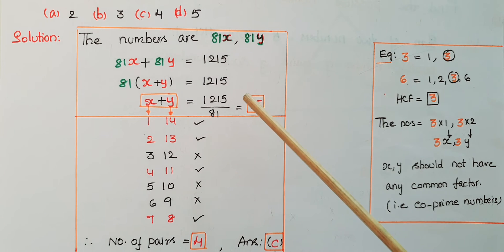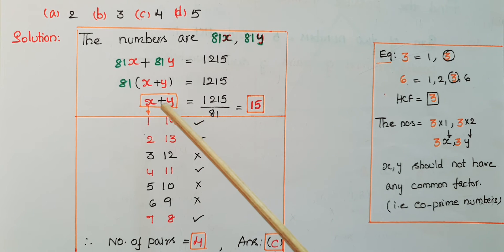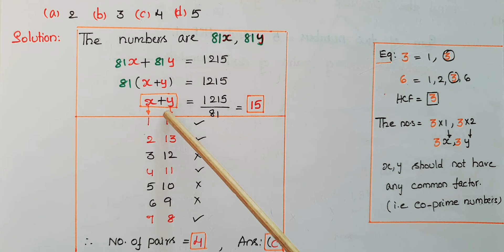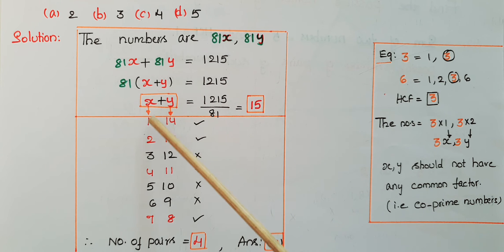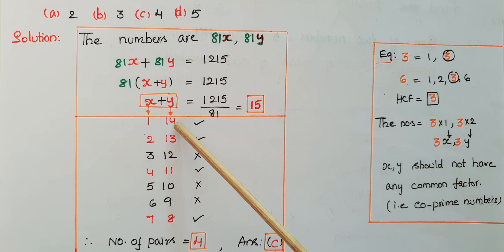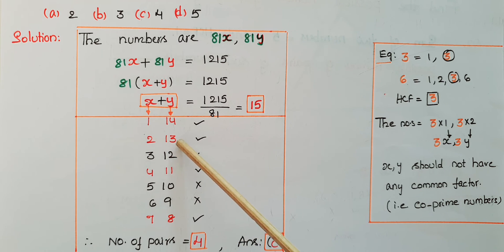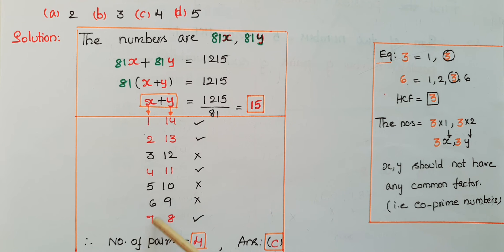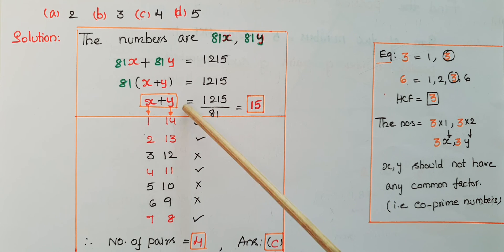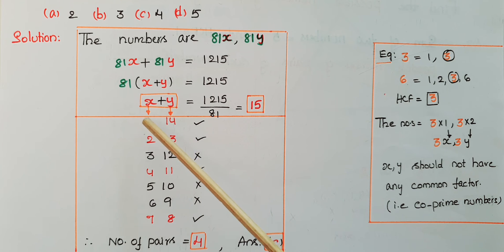Now we assume x and y values whose sum is 15. If x is 1 then y is 14 (since 1+14=15); if x is 2 then y is 13; and so on: (3,12), (4,11), (5,10), (6,9), (7,8). These are the pairs of numbers whose sum is 15. Out of these pairs, we check which are co-prime numbers.